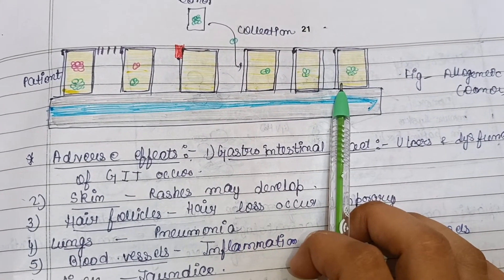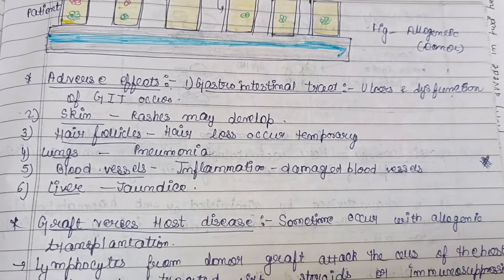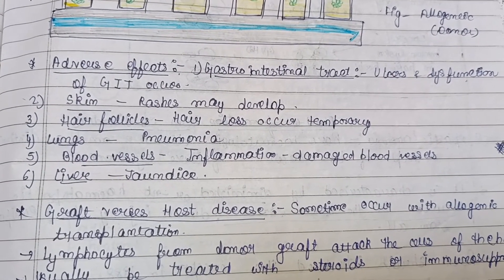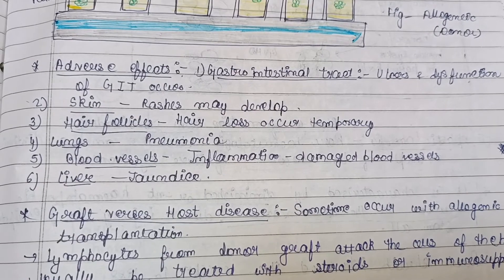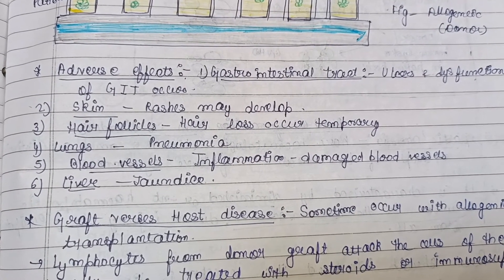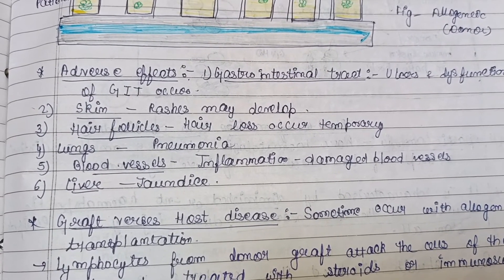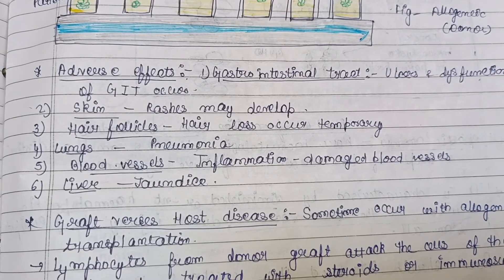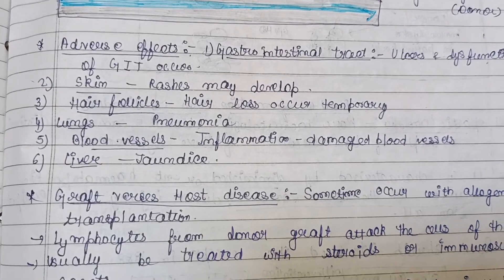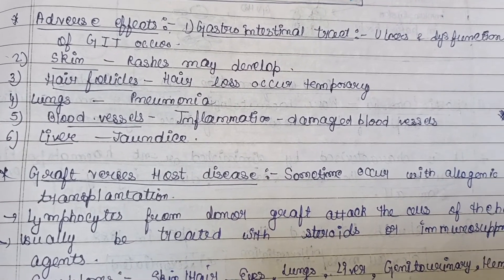There are some adverse effects of bone marrow transplantation. Effects are seen on the gastrointestinal tract — ulcers and dysfunction can occur. Skin rashes may develop. Hair loss can occur temporarily. Pneumonia can be seen in the lungs. Inflammation and damaged blood vessels occur, and jaundice can occur in the liver. Another major complication is GVHD, or graft versus host disease.